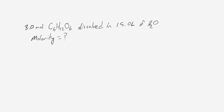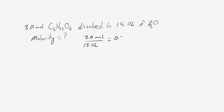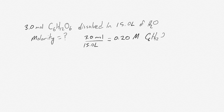So let's say we have three moles of some sugar dissolved in 15 liters of water. We want to know what is the molarity. Well, we know molarity has units of moles per liter, so what we do is we set up a ratio. We have 3.0 moles of sugar divided by 15.0 liters, and we do that division, we end up with a value of 0.20 molar C6H12O6.